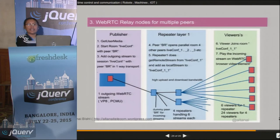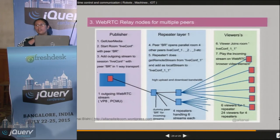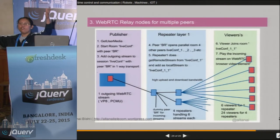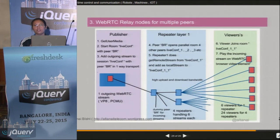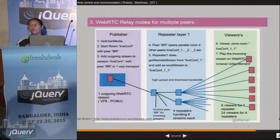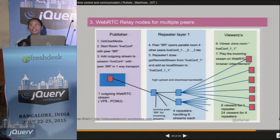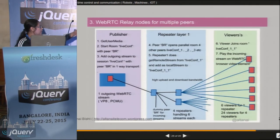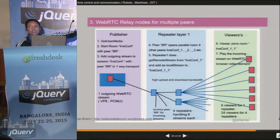By broadcasting, I mean I just want multiple viewers for a single publisher. It could be a channel, it could be my own algorithm, it could be through relays, as you could see here. I tried all four alternatives, and right now I go with the third alternative shown here.